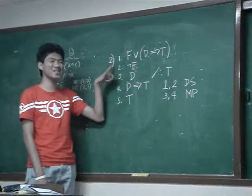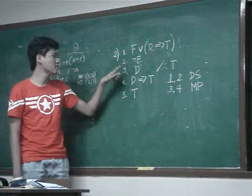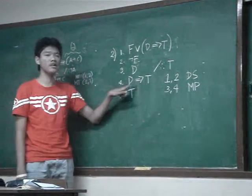When looking at 1 and 2, we can say that this is in this juncture. Then, our number 4 will be D implies T.